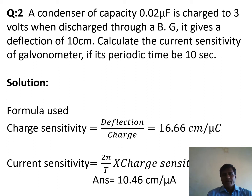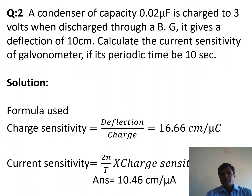Solution. The given quantities are: condenser capacity = 0.02 microfarad, voltage = 3 volts, deflection = 10 centimeters, and periodic time T = 10 seconds. The charge sensitivity = deflection / charge. The charge on the capacitor is calculated using Q = C × V, where C = 0.02 microfarad and V = 3 volts.